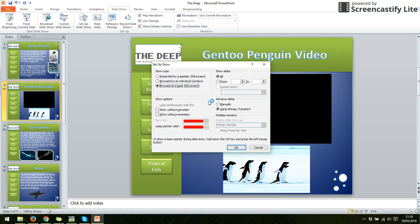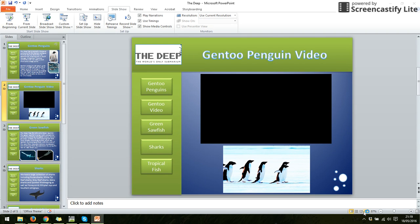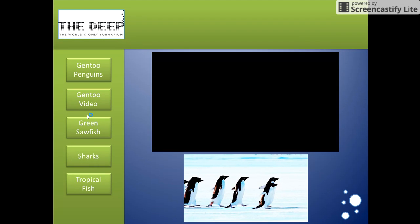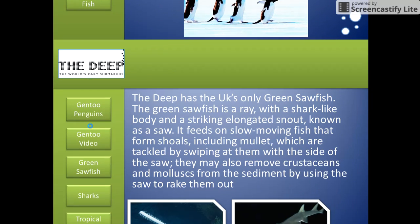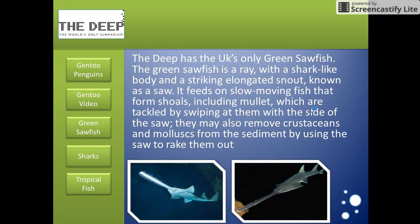When it says browsed at a kiosk, it means one of those things you get at a museum, aquarium, or zoo — a touchscreen device that you touch. What you should notice now, if I click OK, is that if I click the button — let's go to green sawfish, that works. If I click anywhere else, you should be able to hear me clicking: forward arrow, left, right and back — it doesn't do anything. It only allows me to use the buttons.